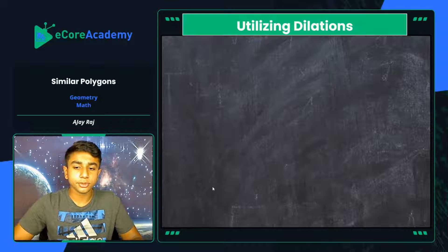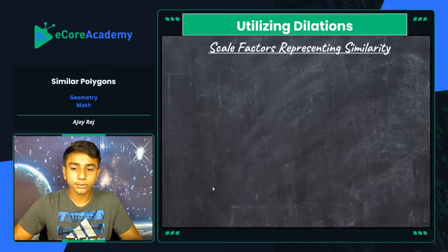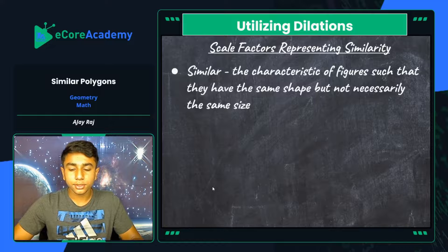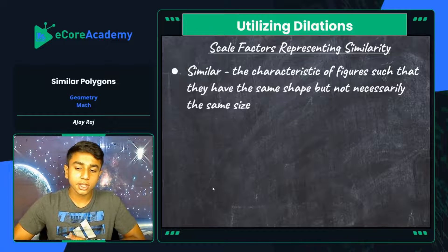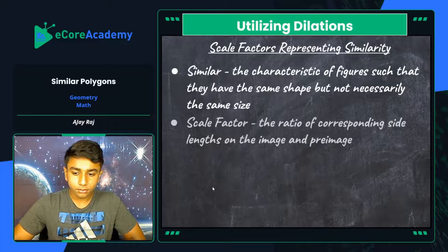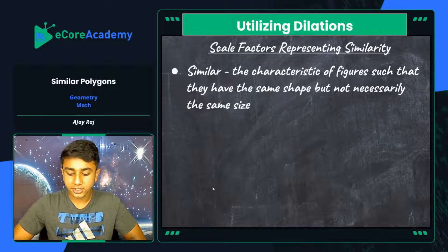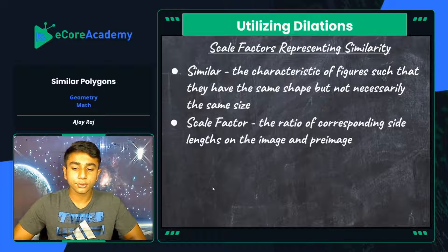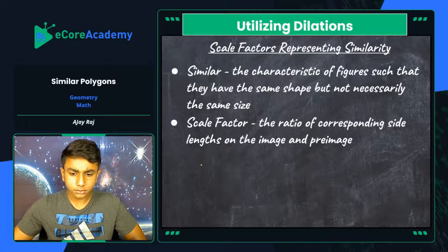Let's utilize dilations to represent similarity. I want to give a bit more overview of how scale factors — the calculating factor of dilations — represent similarity. Similar figures, by the laws of geometry, have the same shape but not necessarily the same size. For similarity, all corresponding angles must be of the same measure, and all side lengths must be correspondingly proportional with the same exact ratio. The scale factor is the ratio of corresponding side lengths on the image and pre-image, where the pre-image is the original figure and the image is the new figure.